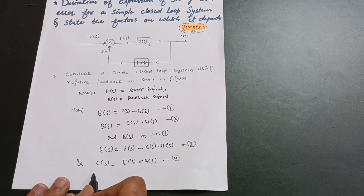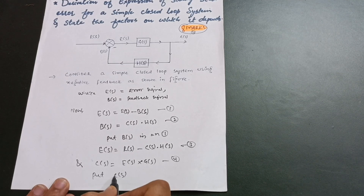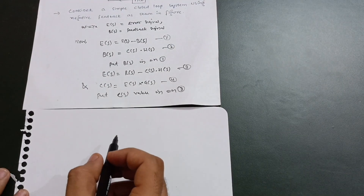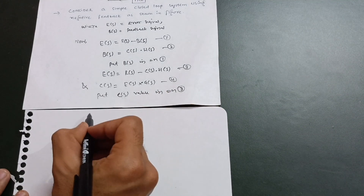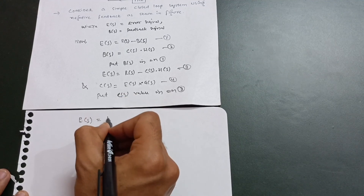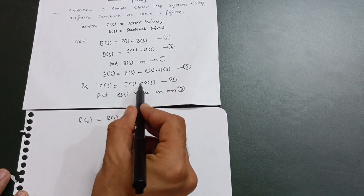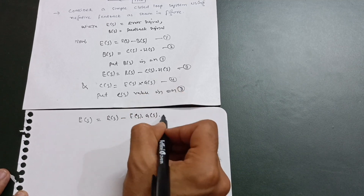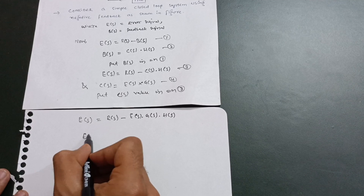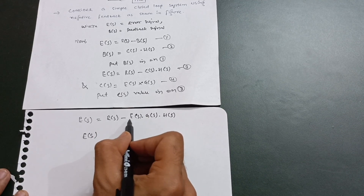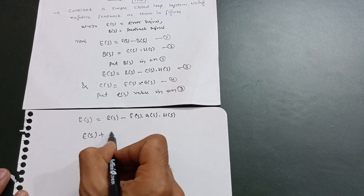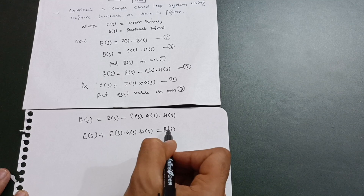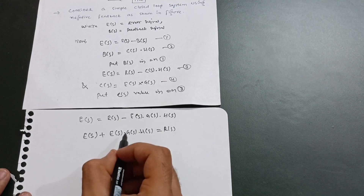Substituting C(s) into equation three, I get E(s) = R(s) − E(s)·G(s)·H(s). The E(s) term on the right-hand side is negative, so I bring it to the left-hand side where it becomes positive: E(s) + E(s)·G(s)·H(s) = R(s).